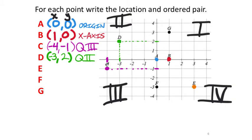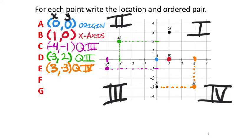Point E is down in the bottom right. Its x value, following up to the x-axis, is positive 3. Following over to the y-axis, the corresponding y value is negative 3. So E is at (3, negative 3), and it's in quadrant 4.